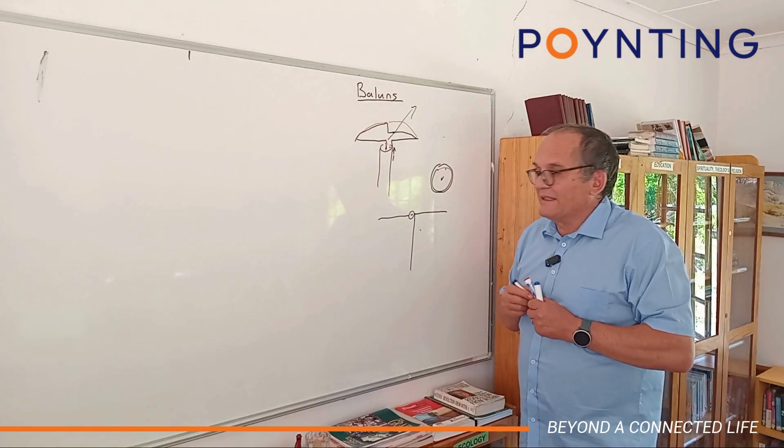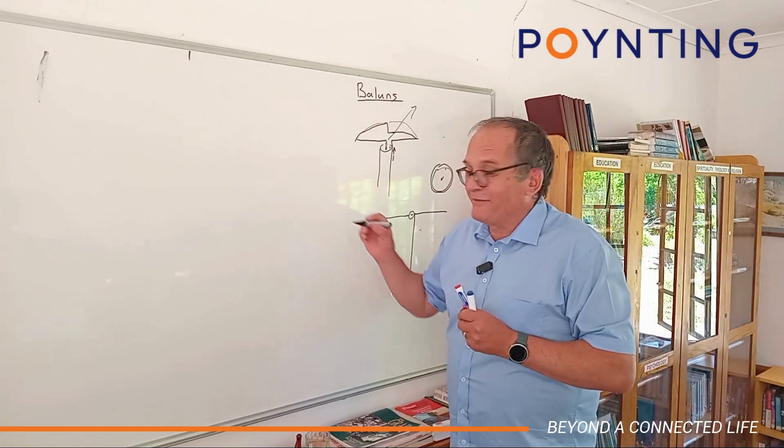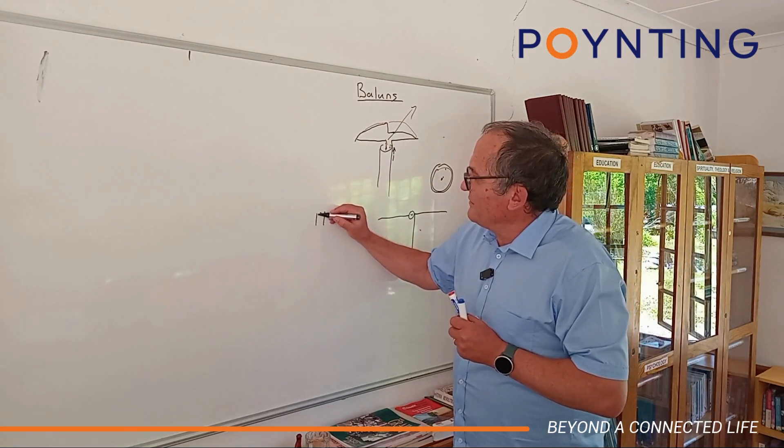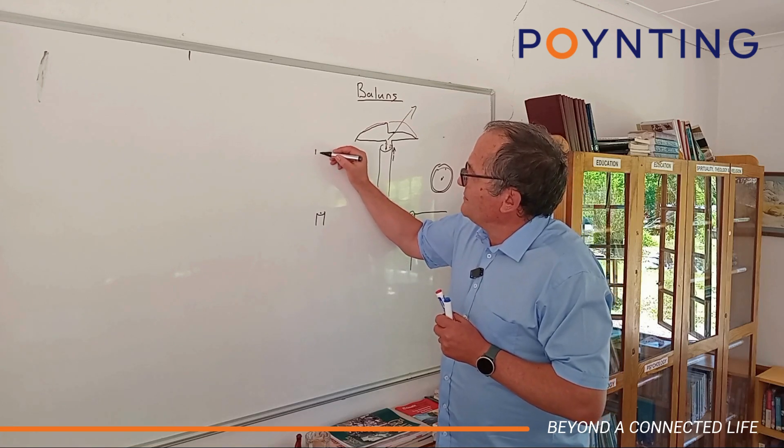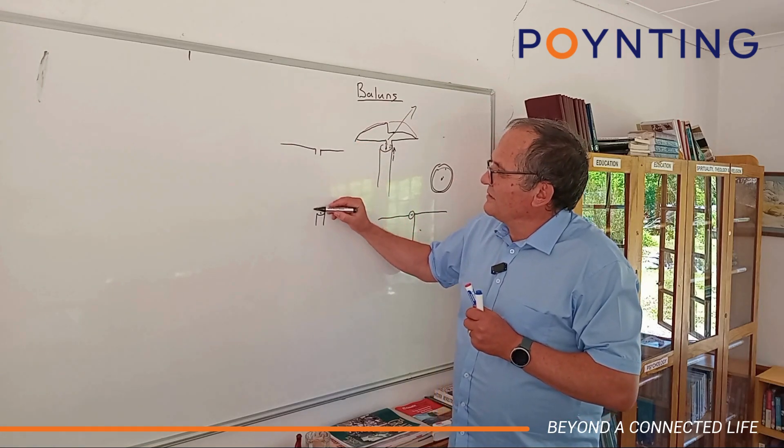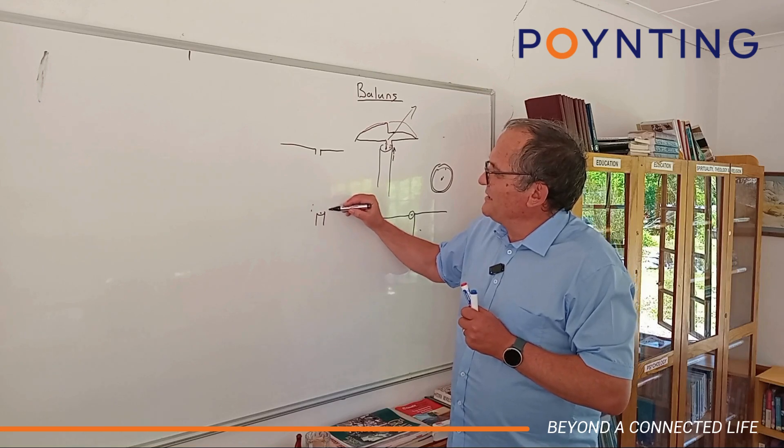Balun - something - and we've got very clever ones, something that you introduce here between the feed and the antenna. One of my favorites is where you start off with a wide piece of PCB board and you taper the ground plane of the PCB board.